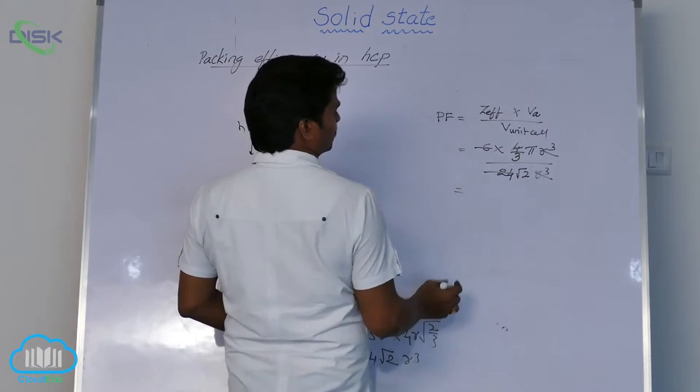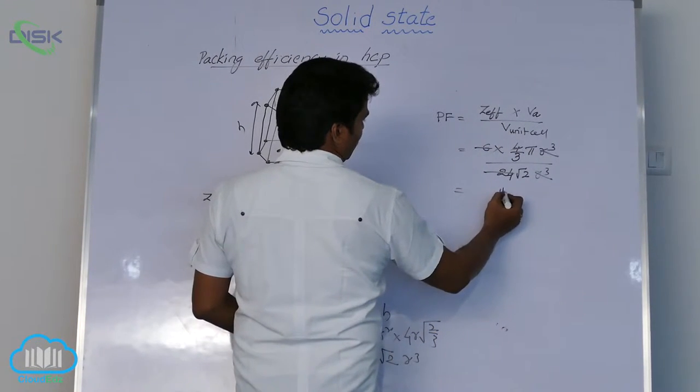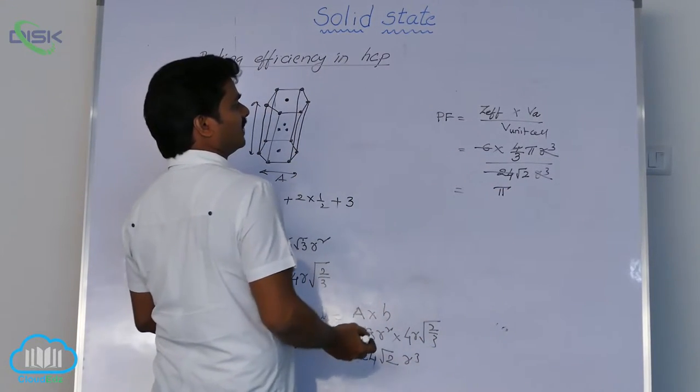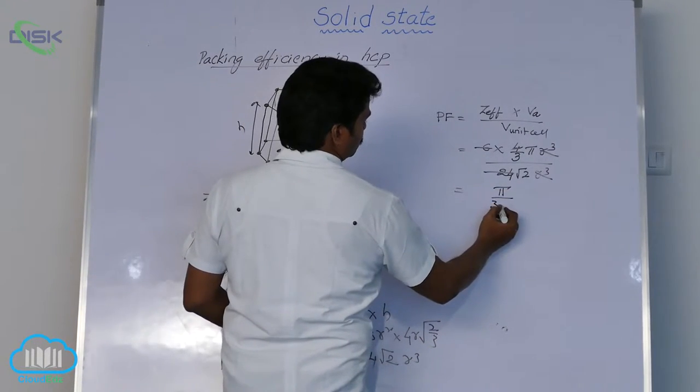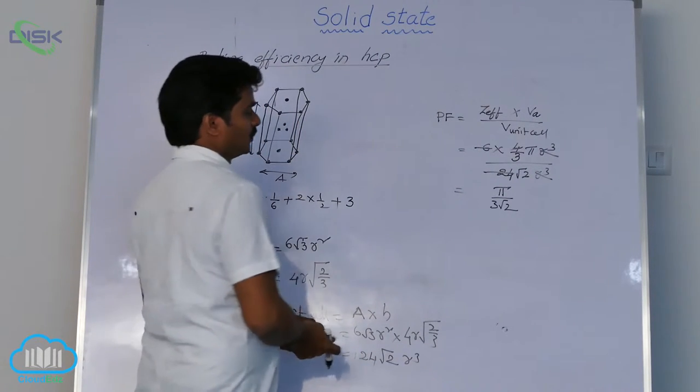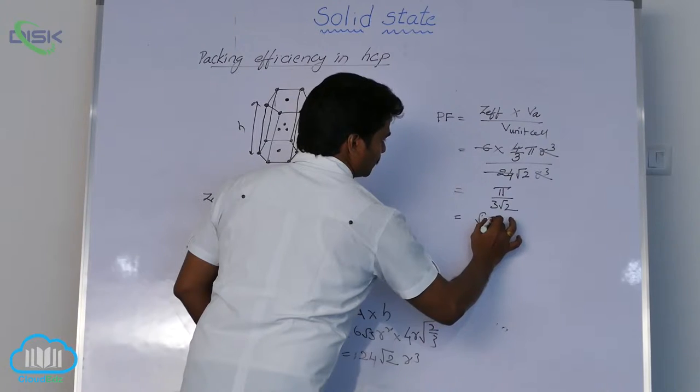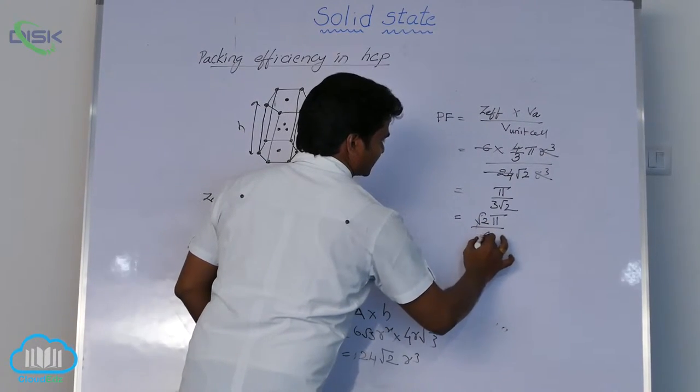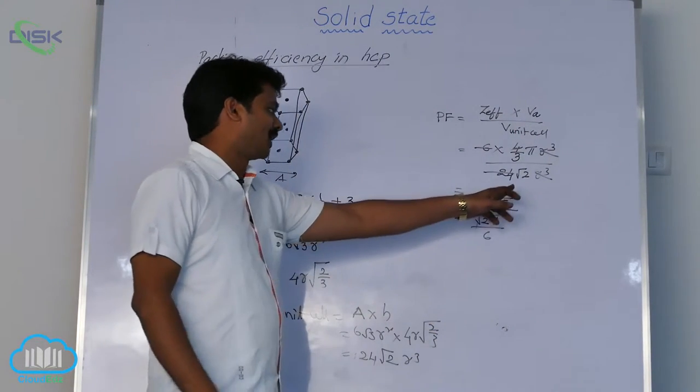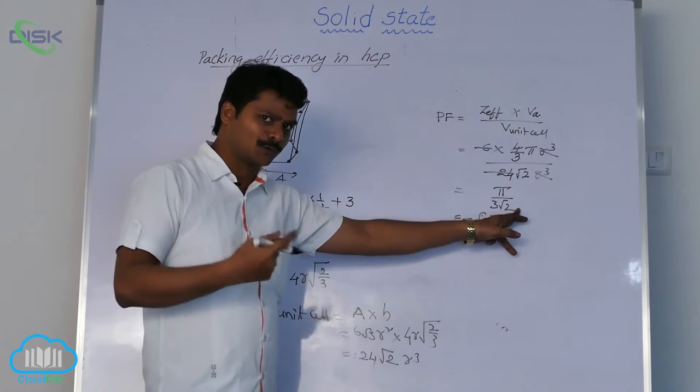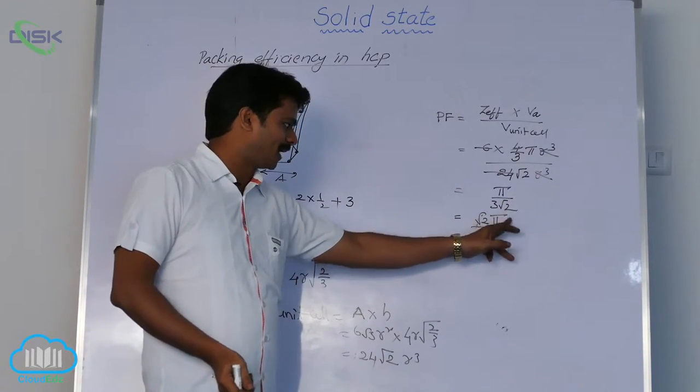Now which one is left in the numerator? Pi and in the denominator 3 root 2. So pi by 3 root 2, we can write it as root 2 pi by 6. So when you multiply both numerator and denominator with root 2, we will get root 2 pi by 6.